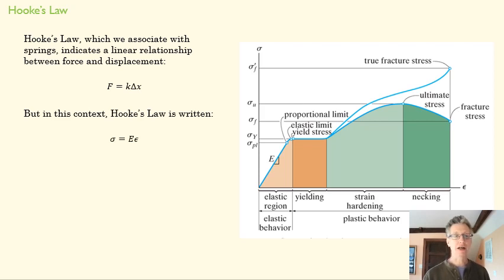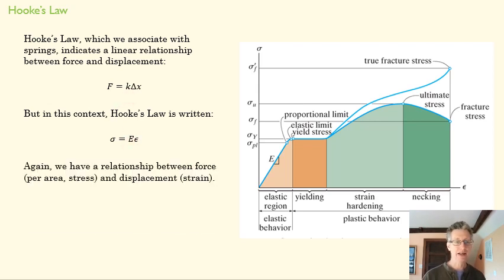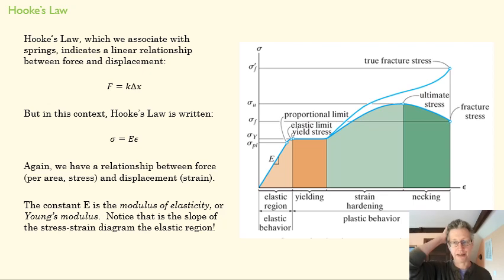When we talk about stress and strain, we can rewrite Hooke's Law this way, where delta x, the change in shape of the spring, is replaced by strain, the change in the shape of our solid body. The force is replaced by stress here, and E replaces k. And E is our modulus of elasticity, which is sometimes called Young's modulus.